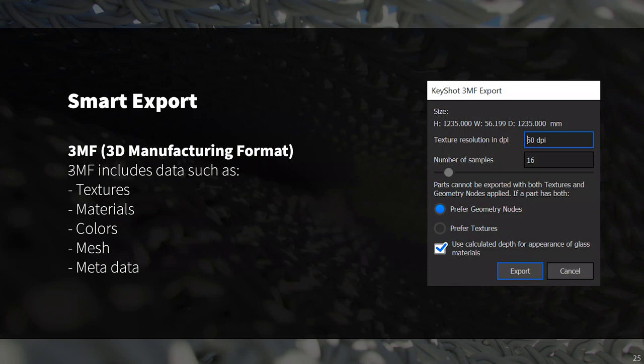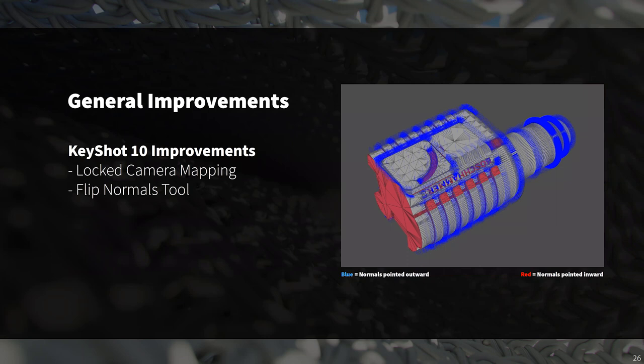The last things I wanted to touch on before our demos are two general improvements to KeyShot 10. First, we have locked camera mapping, which opens up the possibilities for placing textures and labels. With this new feature, you can project an image onto your geometry from a fixed camera position. This is particularly useful for architectural visualizations — if you have a photograph of a house, you can recreate the camera position in KeyShot and easily project that image onto your geometry.